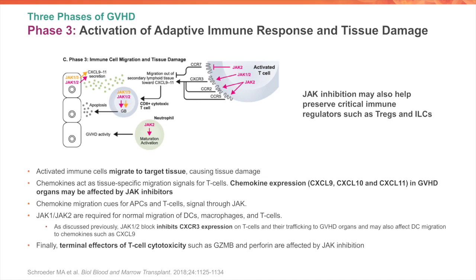The final phase of graft versus host disease development is the activation of the adaptive immune response and subsequent tissue damage. Activated immune cells, namely T cells, migrate to target tissues and cause tissue damage. Their migration to these target tissues is dependent on chemokine expression regulated by JAK signaling, and JAK inhibitors can affect chemokine receptor expression patterns on T cells. JAK1 and JAK2 are required for normal migration of dendritic cells, macrophages, and T cells. Finally, terminal effectors of T cell cytotoxicity, such as granzyme and perforin, are also affected by JAK inhibition.